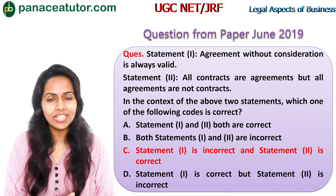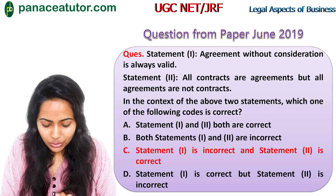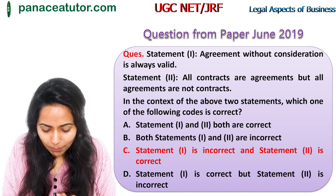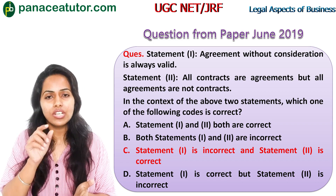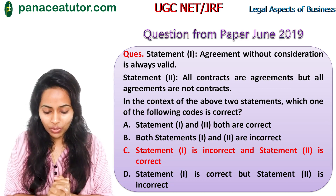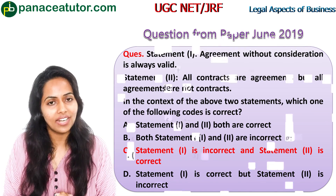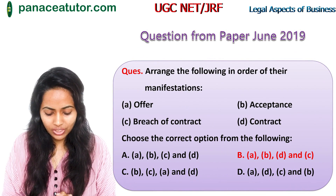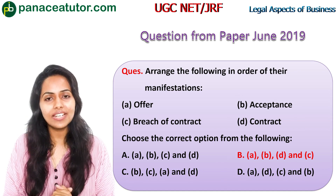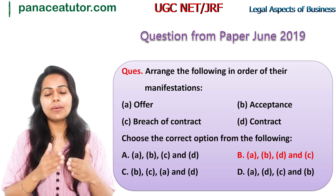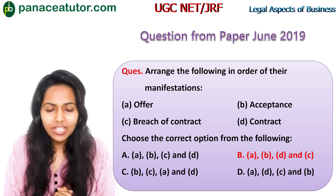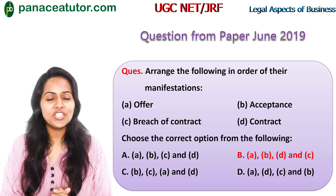Now let us discuss the question from the June 2019 UGC NET attempt. Statement 1: Agreement without consideration is always valid. Statement 2: All contracts are agreements but all agreements are not contracts. Statement 1 is incorrect because an agreement requires offer plus acceptance plus consideration. Statement 2 is correct, as we discussed. The answer is option 3 — statement 1 is incorrect and statement 2 is correct. The second question asks to arrange in order of manifestation: offer, acceptance, breach of contract, and contract. The correct order is offer (A), acceptance (B), contract (D), breach of contract (C) — option number 2.